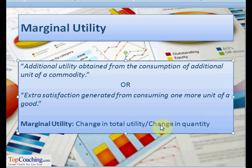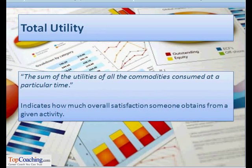Marginal utility is specified as the change in total utility divided by the change in quantity. Another type of utility is total utility.